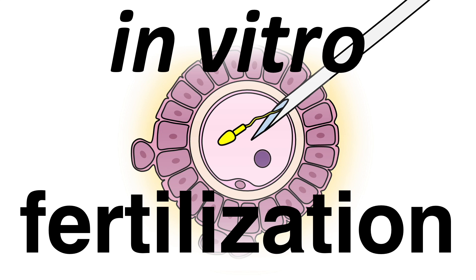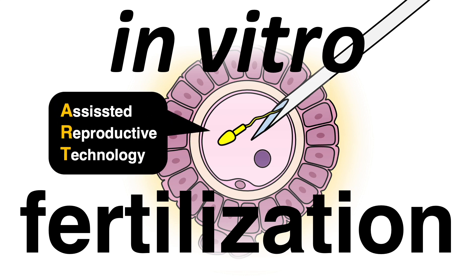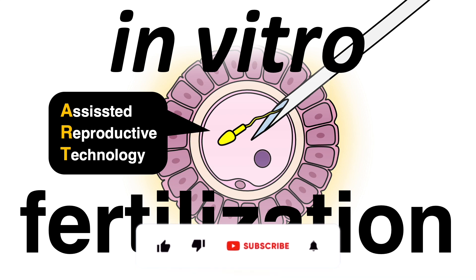Procedures that assist to manipulate oocytes outside the body are referred to as assisted reproductive technology. In vitro fertilization, short IVF, is the most common form of it. In vitro means nothing more than inside a glass — the oocytes are literally fertilized by sperm in a petri dish. How a typical IVF protocol is performed will be the focus of today's video.